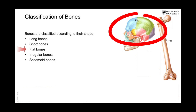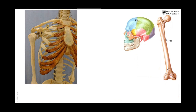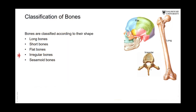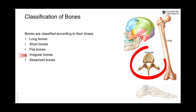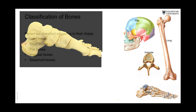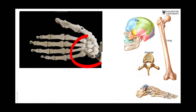Then we have flat bones. The bones of the calvary of the skull are flat bones. Other examples of flat bones include the ribs and the sternum. We also have irregular bones, like the vertebrae, and short bones, such as the tarsal and carpal bones. The carpal bones are present at the wrist and are also a type of short bone.